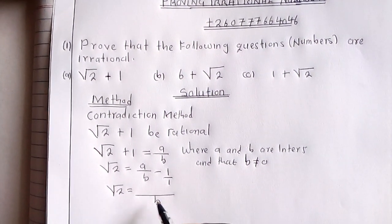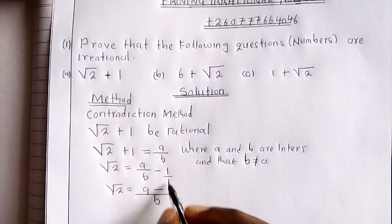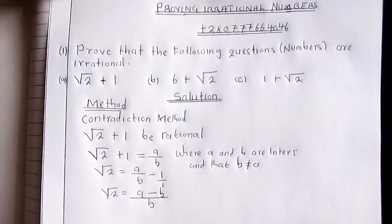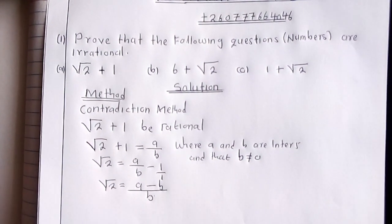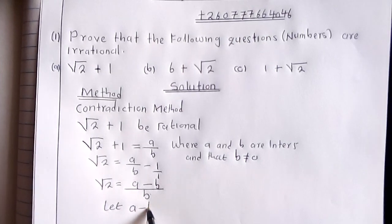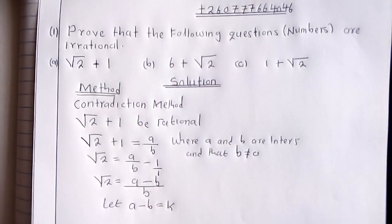B into B is 1, 1 multiplied by A is A, minus this into this. We are going to have A minus B over B.